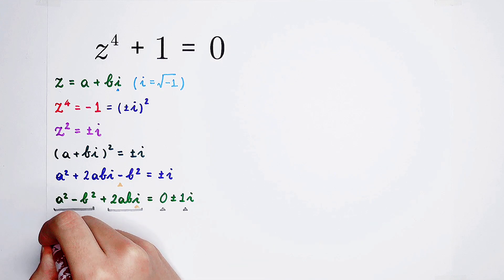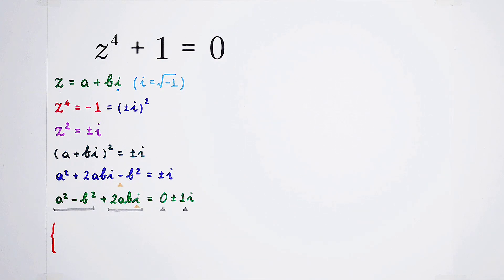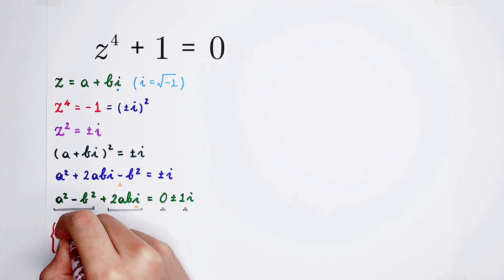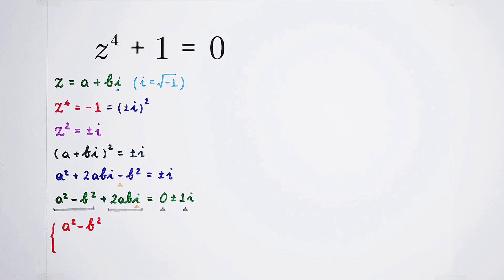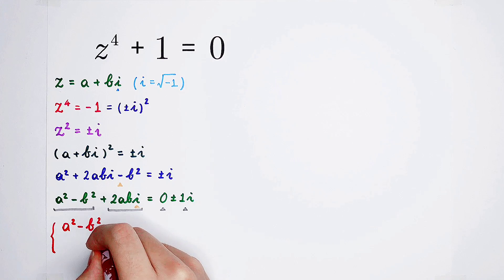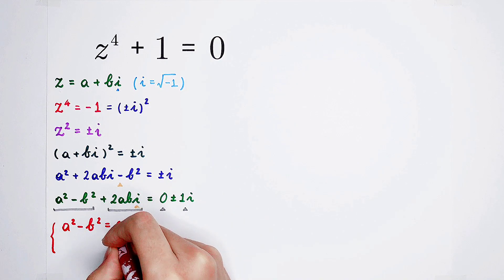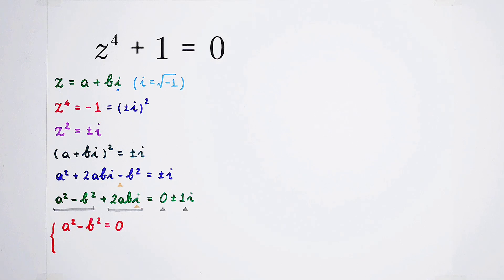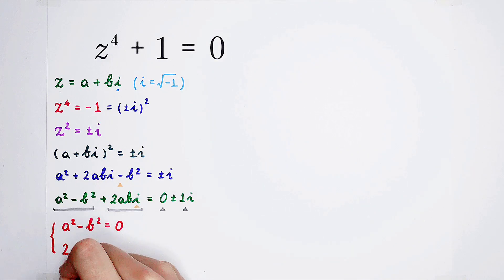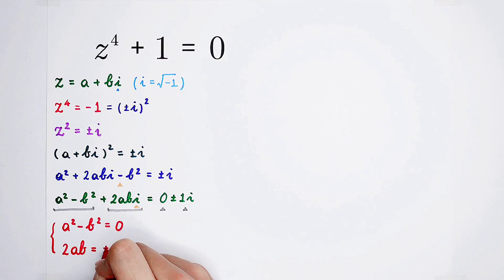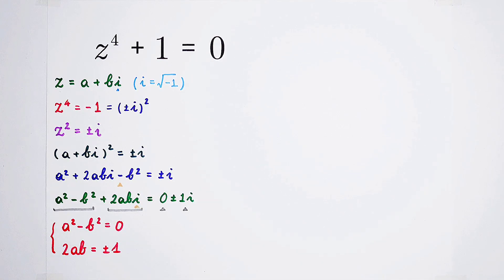We get a system of equations: a squared minus b squared equals 0, and 2 times ab times i equals positive or negative 1 times i. Therefore, 2 times a times b equals positive or negative 1.